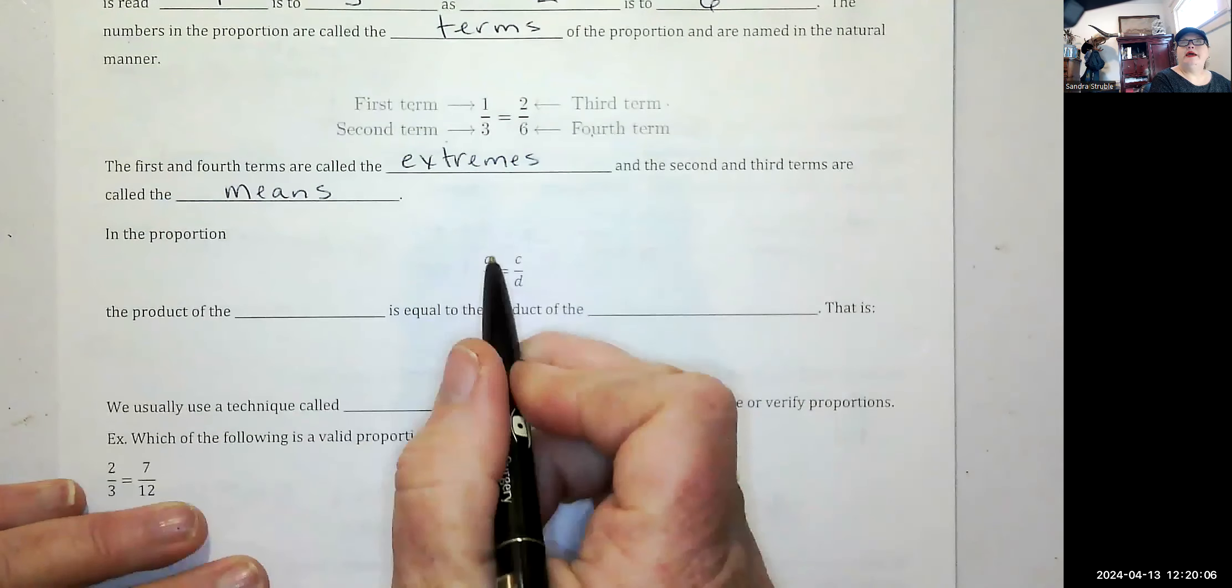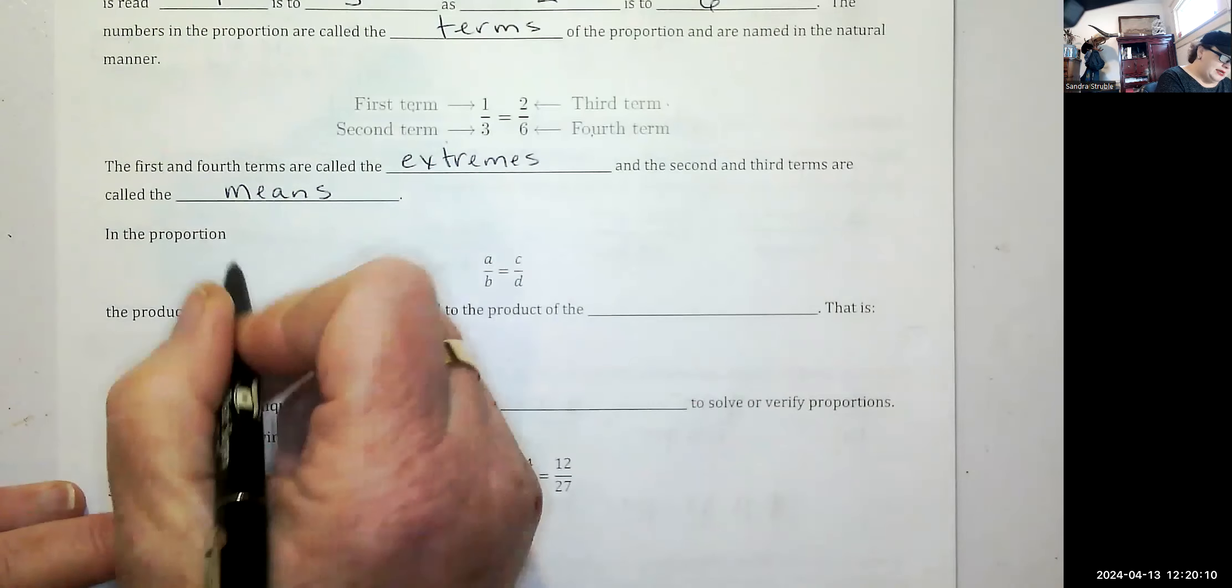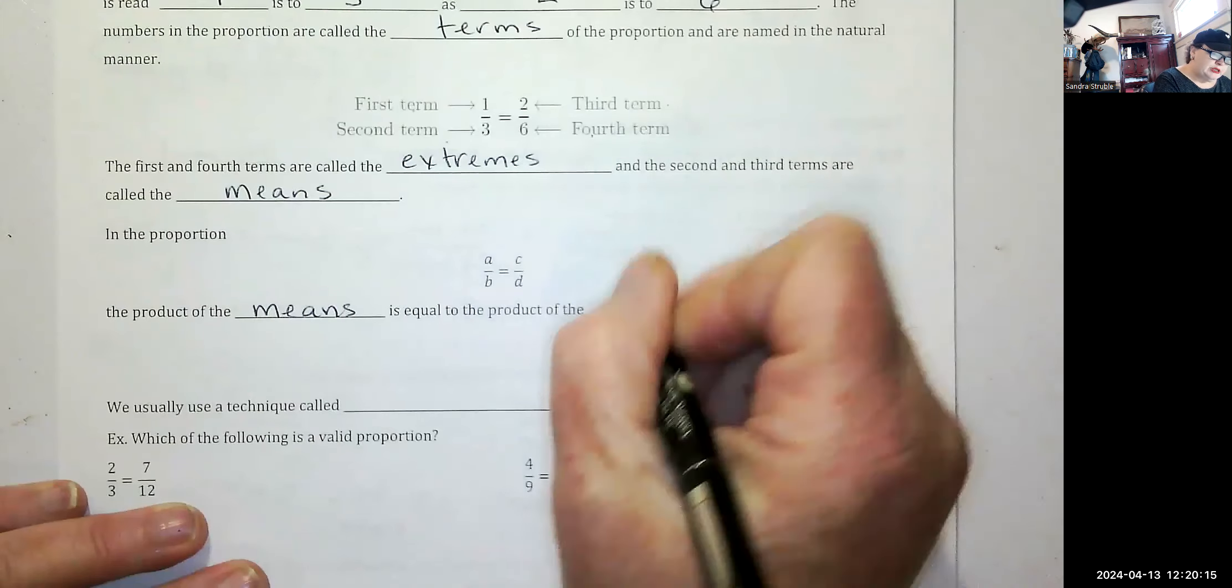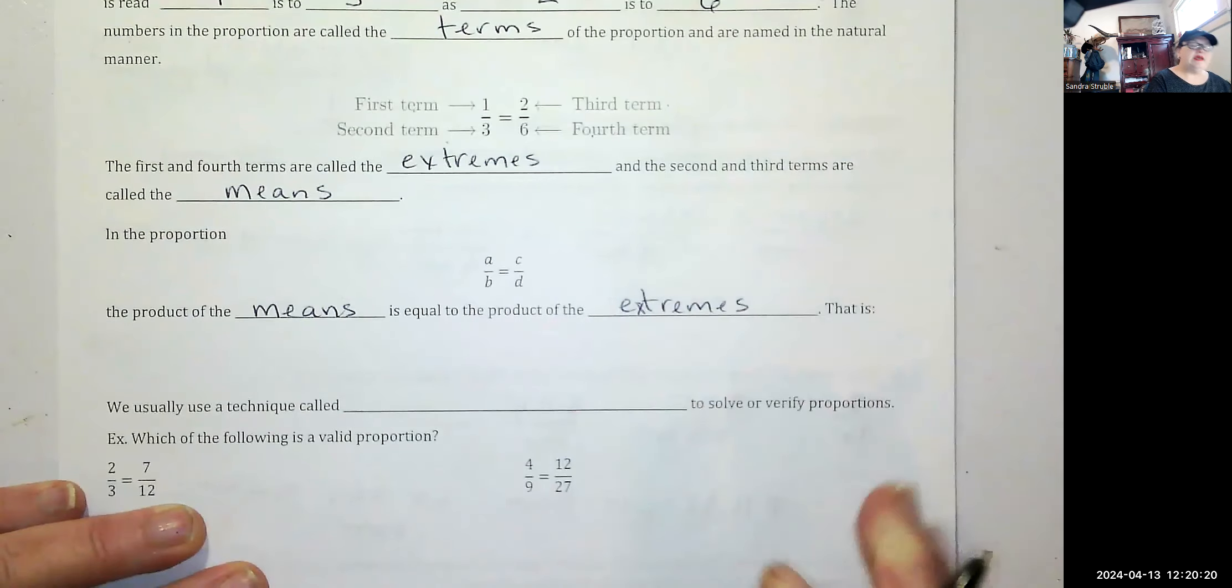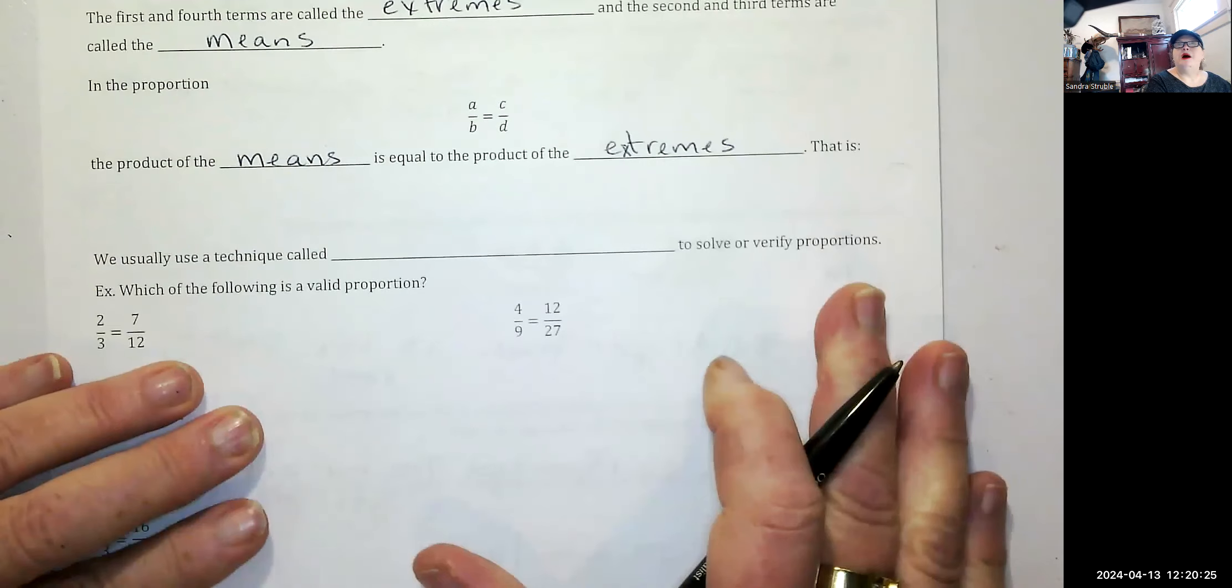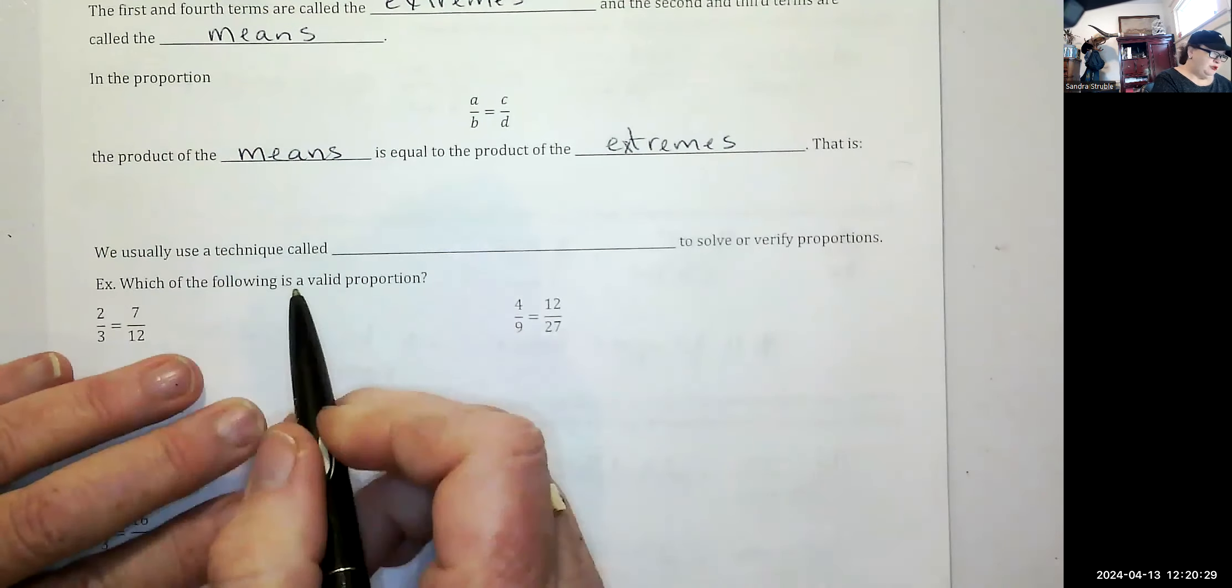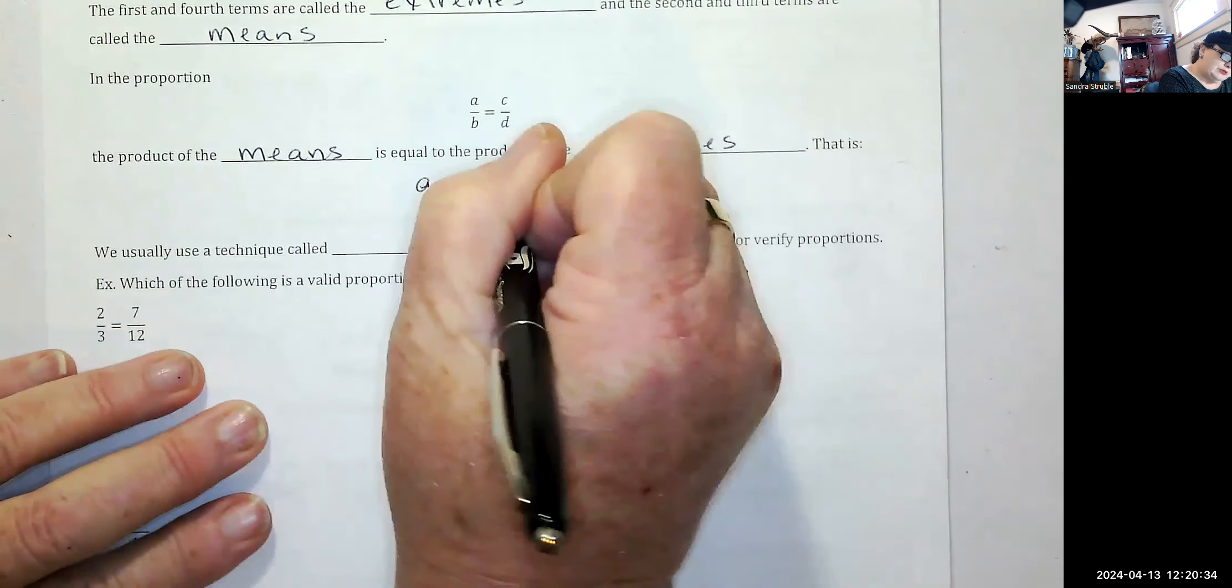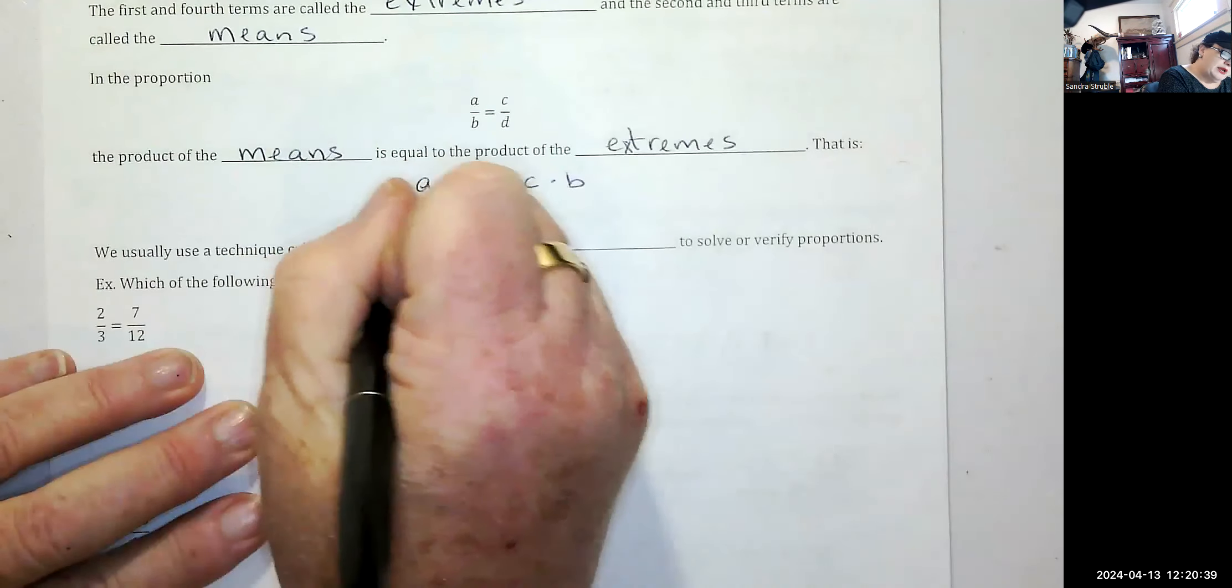In the proportion A is to B as C is to D, the product of the means is equal to the product of the extremes. This is the wording that I try my best to avoid with the student population. We usually use a technique called cross multiplication.